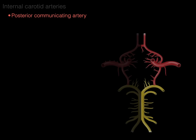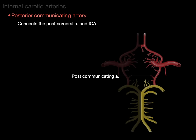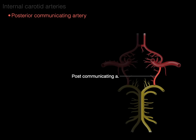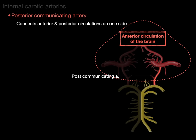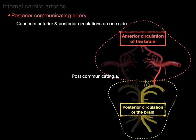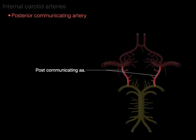Another artery coming off the internal carotid is the posterior communicating artery, which connects the posterior cerebral artery and the internal carotid arteries. It also connects the anterior and posterior circulations on one side. The posterior communicating arteries are paired, one on either side.